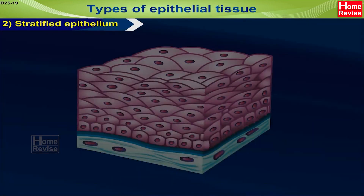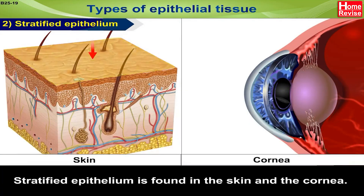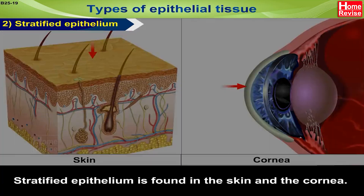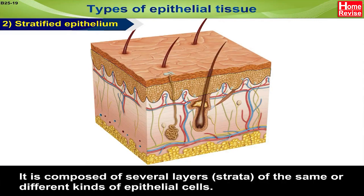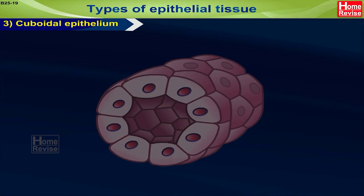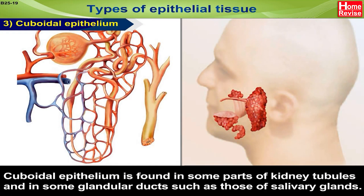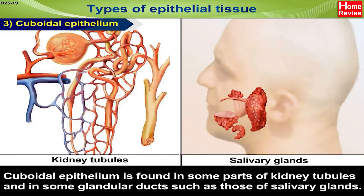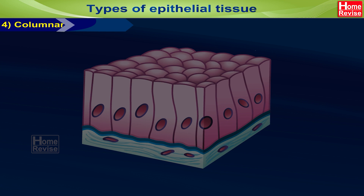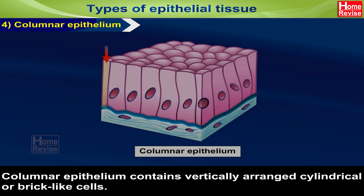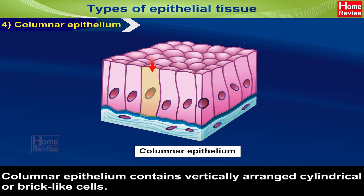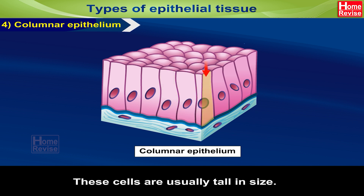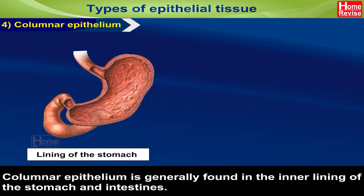2. Stratified Epithelium: Stratified epithelium is found in the skin and the cornea. It is composed of several layers — that is, strata — of the same or different kinds of epithelial cells. 3. Cuboidal Epithelium: Cuboidal epithelium is found in some parts of kidney tubules and in some glandular ducts such as those of salivary glands. 4. Columnar Epithelium: Columnar epithelium contains vertically arranged cylindrical or brick-like cells. These cells are usually tall in size and are generally found in the inner lining of the stomach and intestines.